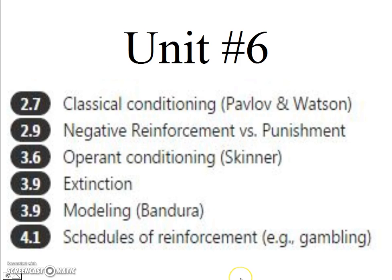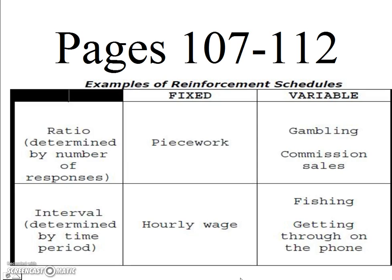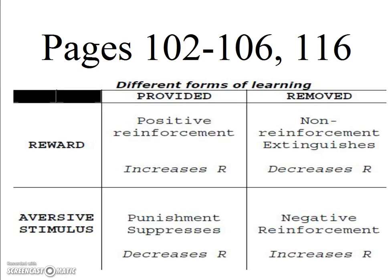In Unit 6, students want to know more about schedules of reinforcement, such as gambling. This is discussed on pages 107 to 112 and summarized in a table showing the different kinds of schedules of reinforcement. Gambling is a variable ratio schedule of reinforcement, extremely resistant to extinction. What I think students need to learn in this chapter is the difference between non-reinforcement, negative reinforcement, and punishment, summarized in these pages, especially in this table.